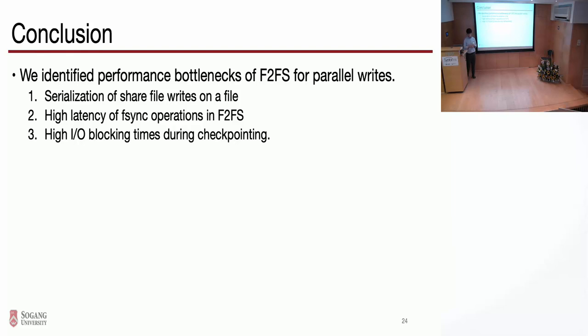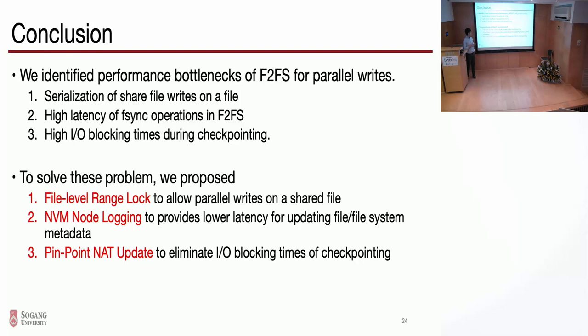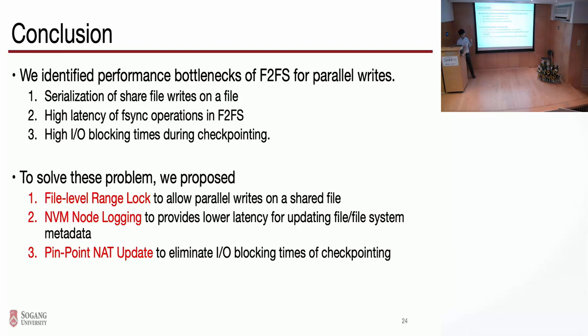As a conclusion, we identified performance bottlenecks of F2FS when doing parallel writes. First is serialization of shared file writes, second is high latency of F-sync, and third is IO blocking time. To solve these problems, we propose the file-level range lock, MVM node logging, and pinpoint NAT update so that we can solve all those problems. Thank you for listening.